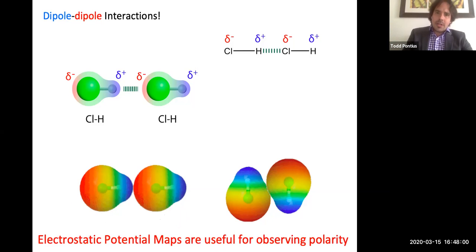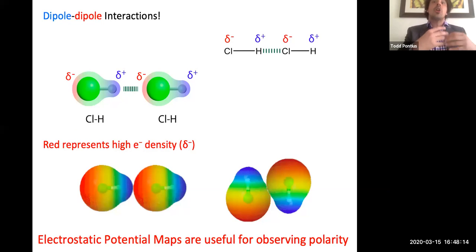We can also use something called electrostatic potential maps to help better visualize this. And the way that these kind of work is the electron clouds around the molecule are depicted. And the areas that are red show areas of high electron density. So those are the areas that have partial negative charges. Whereas the blue, those are the electron poor sides. Those are going to be the sides of partial positive charges.